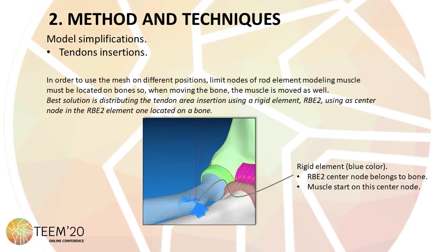In order to maintain the possibility that the mesh can be reused in different positions, the insertions of the tendons in the bone must be done in such a way that, when any of the bones of the joint are moved, the affected muscles automatically move to their new position. Using a single node from the muscle to insert the tendon into the bone causes unwanted stress concentration, so it is preferable to use a rigid element for distribution of efforts in the area of insertion — this refers to the blue element at the bottom of the image. The only condition that this rigid element must fulfill is that its central node must be contained in one of the nodes of the bone, so when the bone is moved, this central node moves, and the rigid element moves the muscle element along with it.